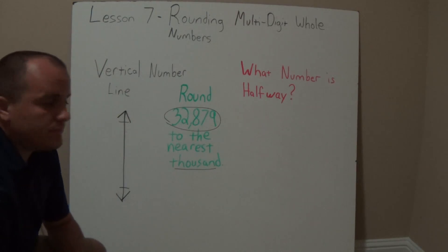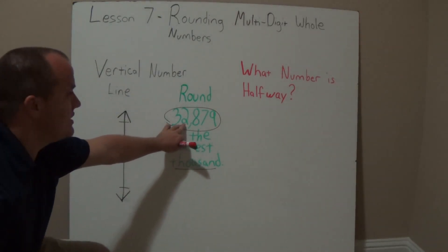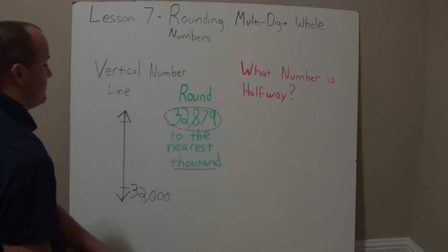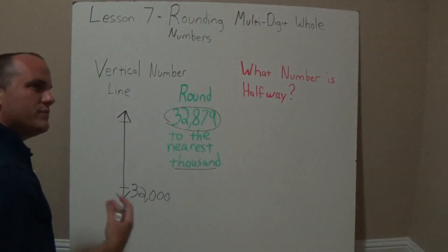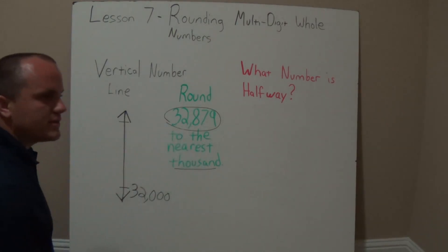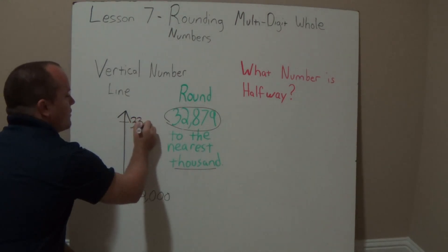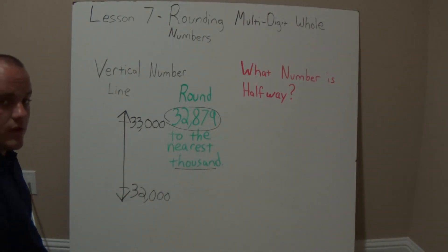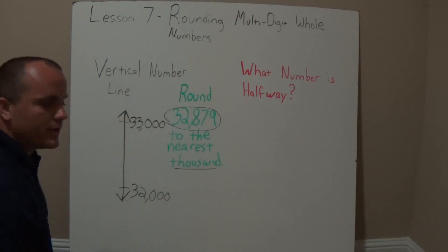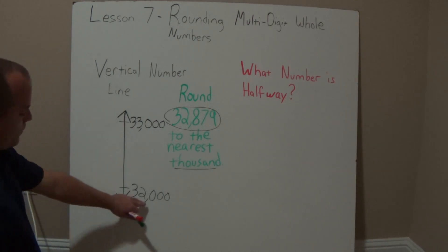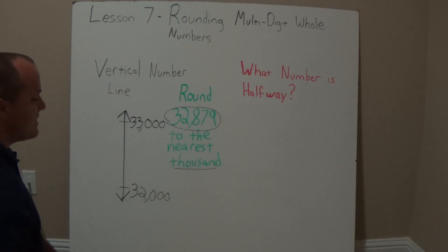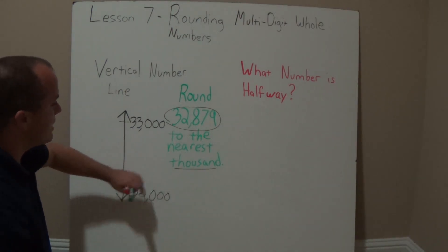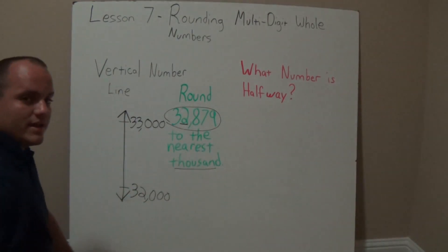I need to show the smallest and largest numbers this number might round to. So 32,879 rounded to the nearest thousand place — I can always identify 32,000 first because that's what the number shows, so I'll write 32,000 at the bottom. Then I think: what digit comes after the two in the thousands place? That's 33,000, which goes at the top. Now I need to find the halfway number between 32,000 and 33,000.